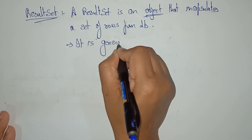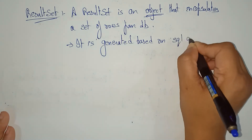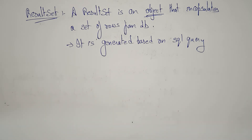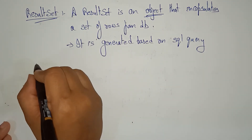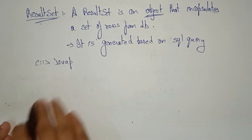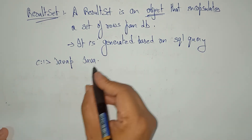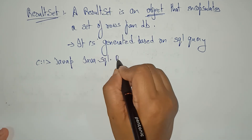A ResultSet is generated based on a SQL query. Whenever the ResultSet is generated, the ResultSet pointer or cursor points to before the first record. To inspect available methods, open the command prompt and call the javap tool: javap java.sql.ResultSet.